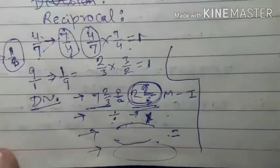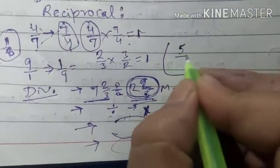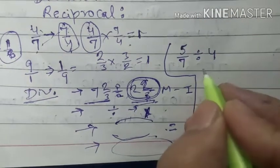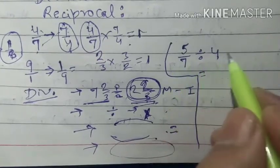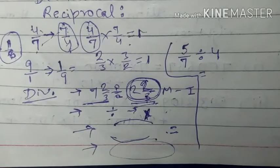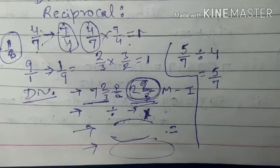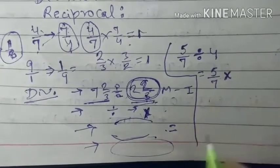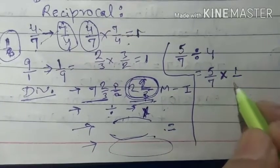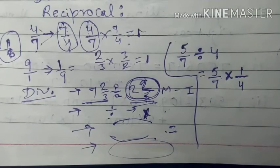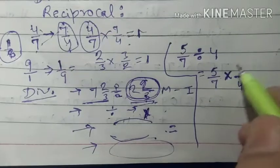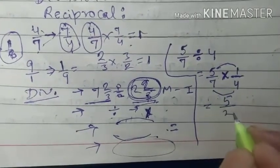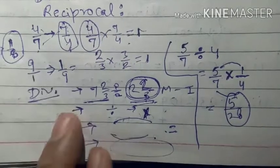Let's do two examples. जैसे हमें दिया 5 upon 7 और इसे हमें divide करना है 4 से — here we have to divide 5 upon 7 by 4. यहाँ पर कोई भी mixed fraction नहीं है, तो पहले fraction को as it is लिख देंगे, divide वाले sign को multiplication में change करेंगे, और 4 का reciprocal 1 upon 4 लिखेंगे। Numerator को numerator के साथ multiply करते हैं: 5×1 = 5, denominator को denominator के साथ: 7×4 = 28, तो 5 upon 28 is the answer.